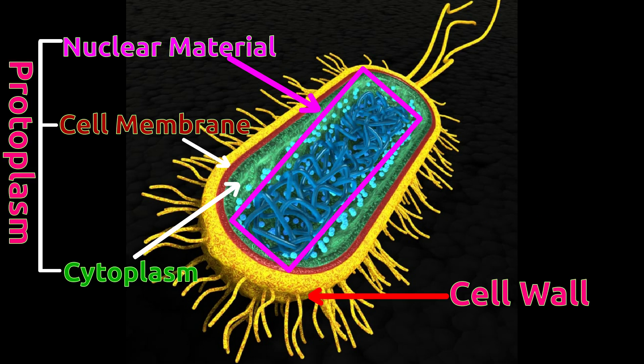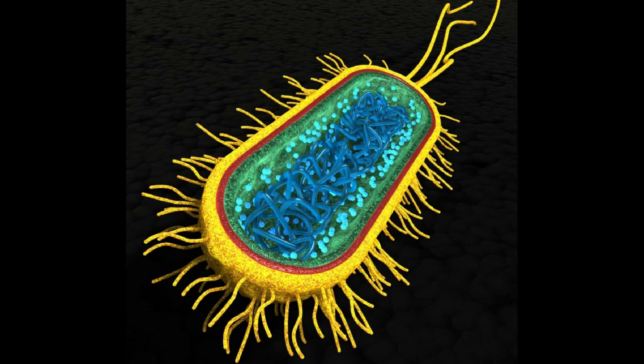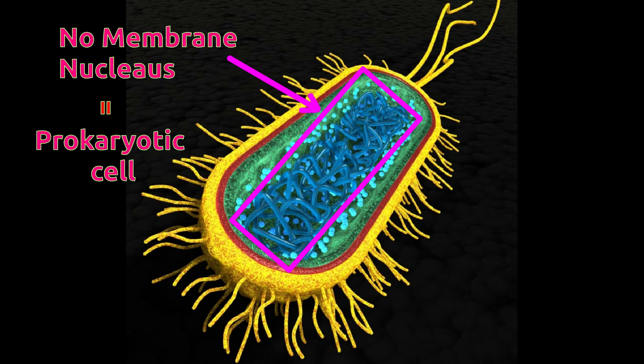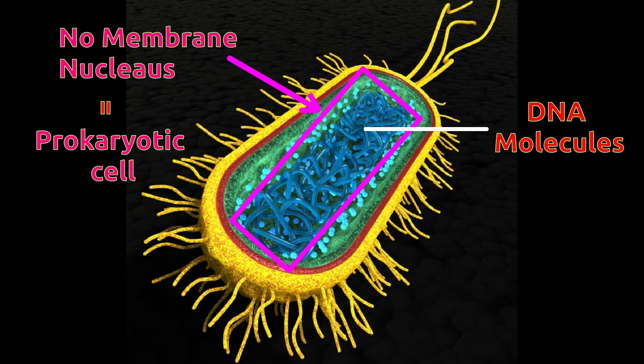Some bacteria, similar to plants, can perform photosynthesis. Protoplasm of such bacteria contains bacteriochlorophyll pigment which helps in photosynthesis. The nucleus of a bacteria cell is not bound by a nuclear membrane and because of this the bacteria cell is a prokaryotic cell. The nucleus contains circular DNA molecules.